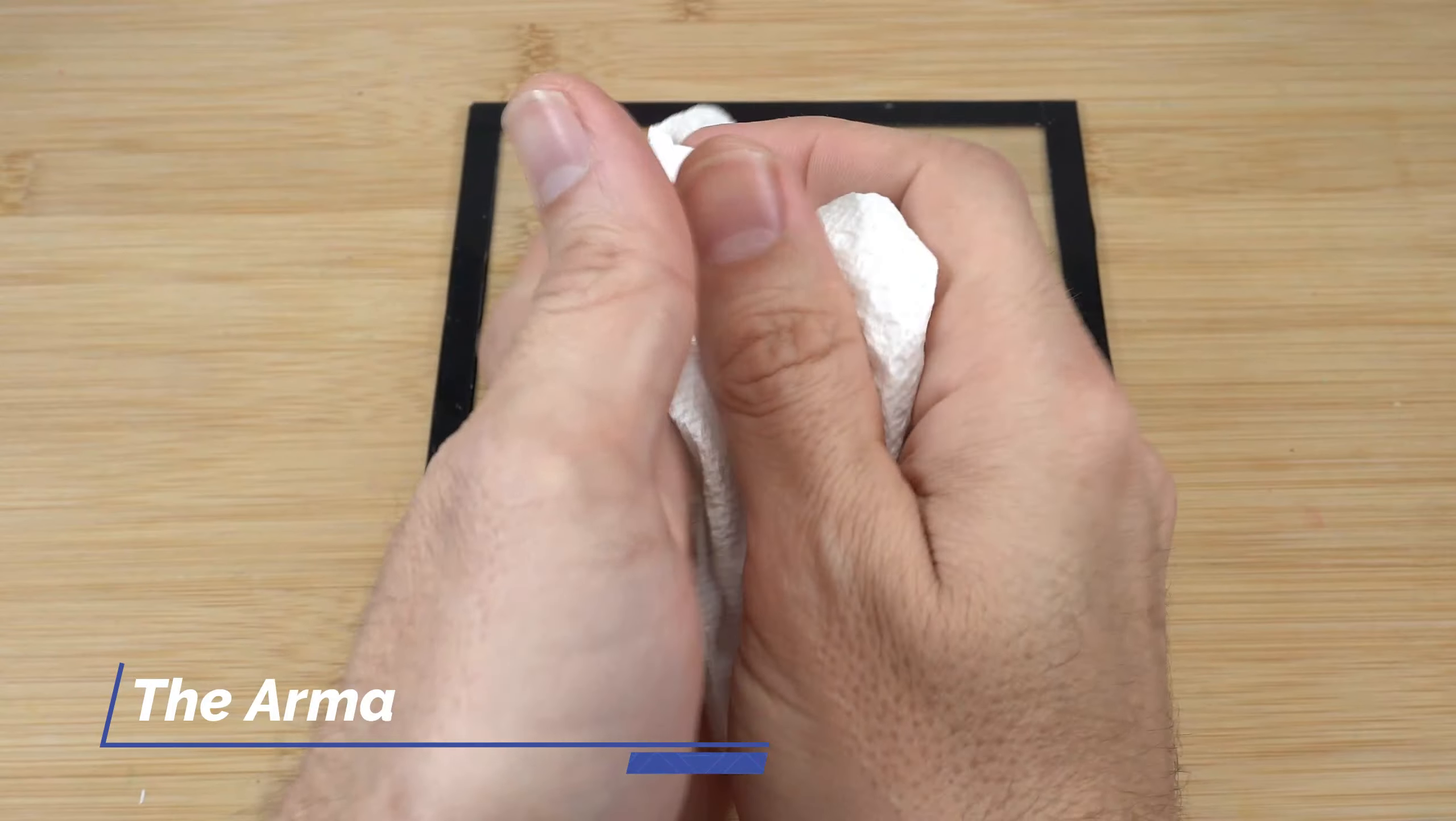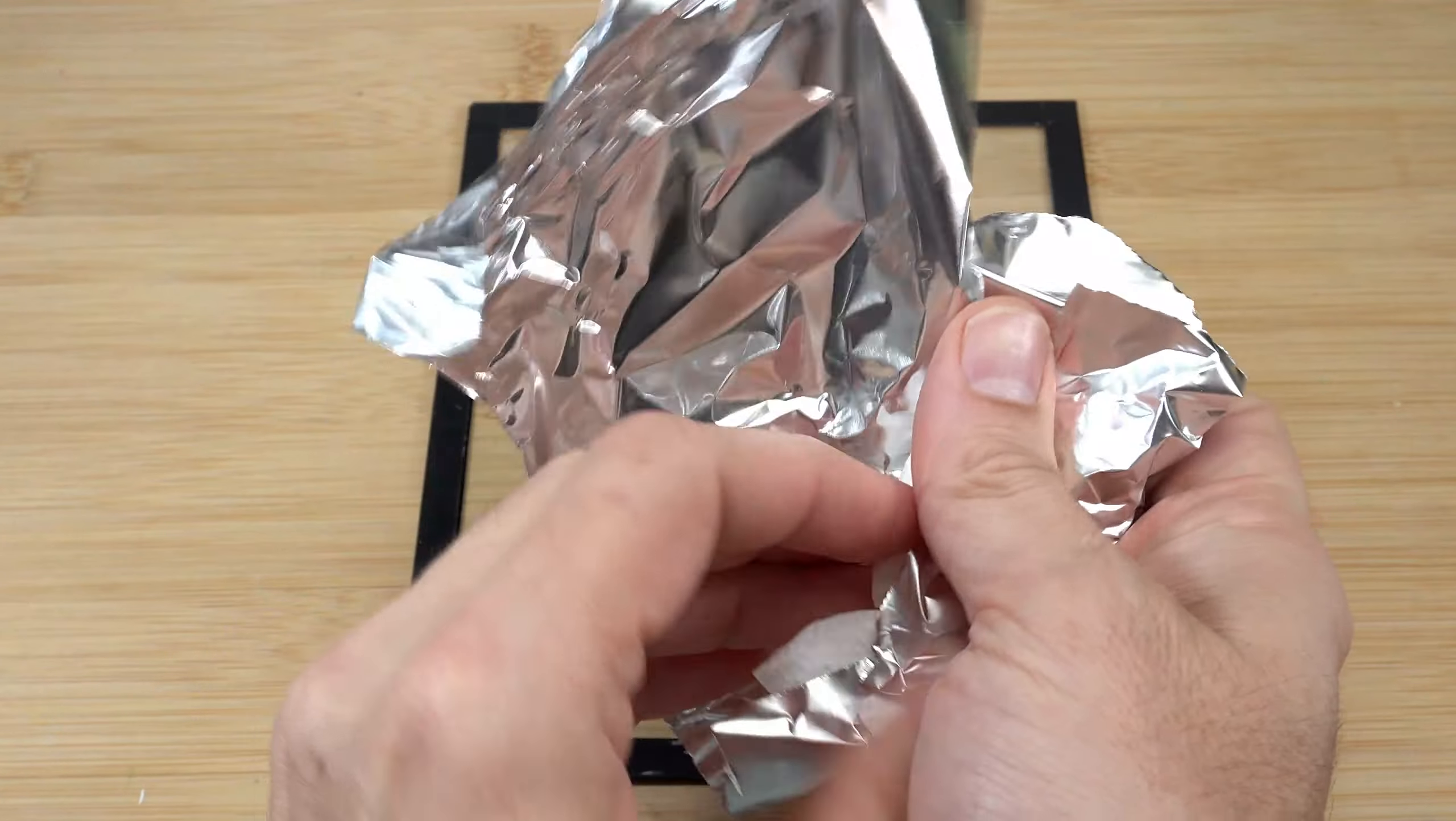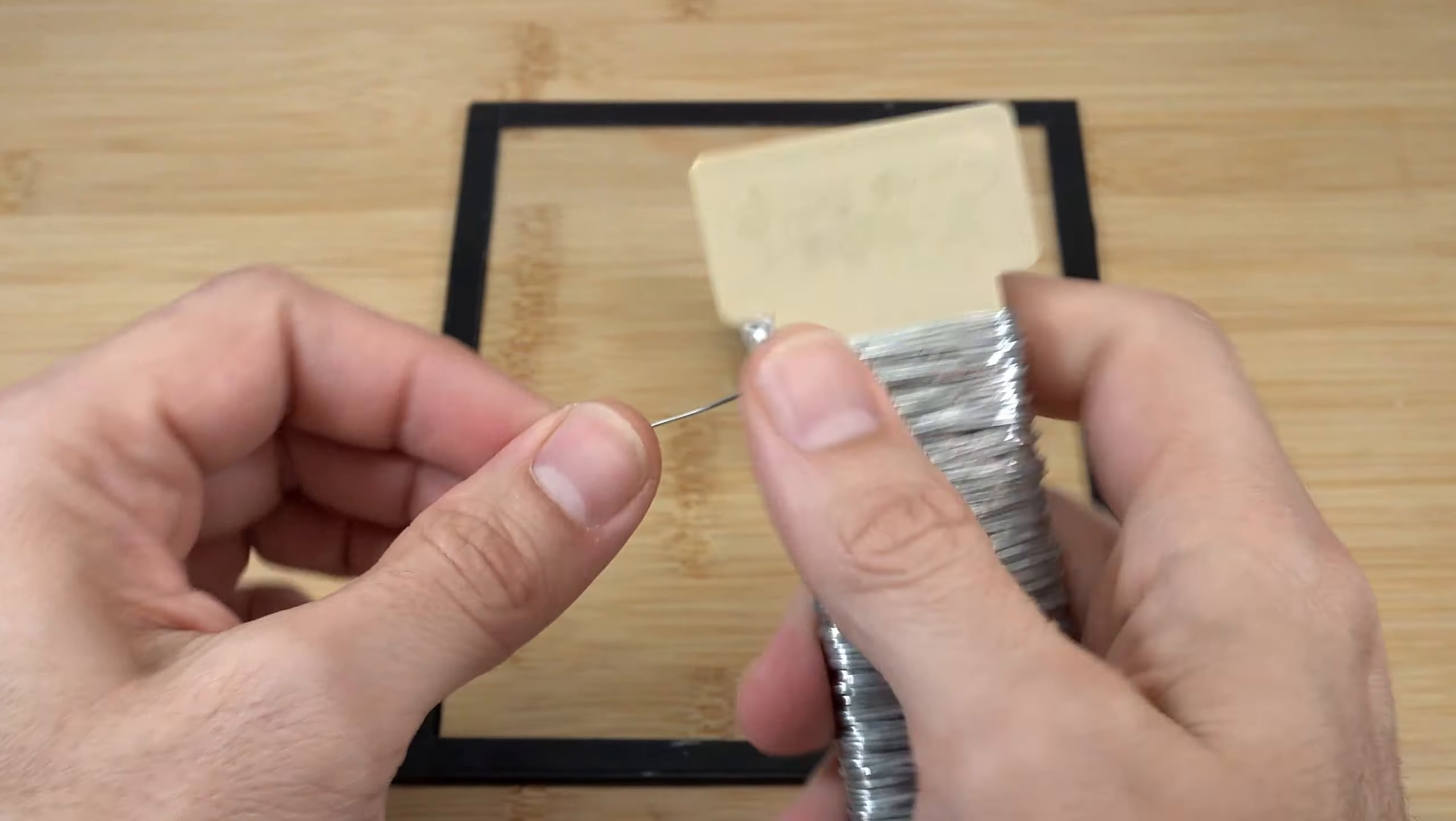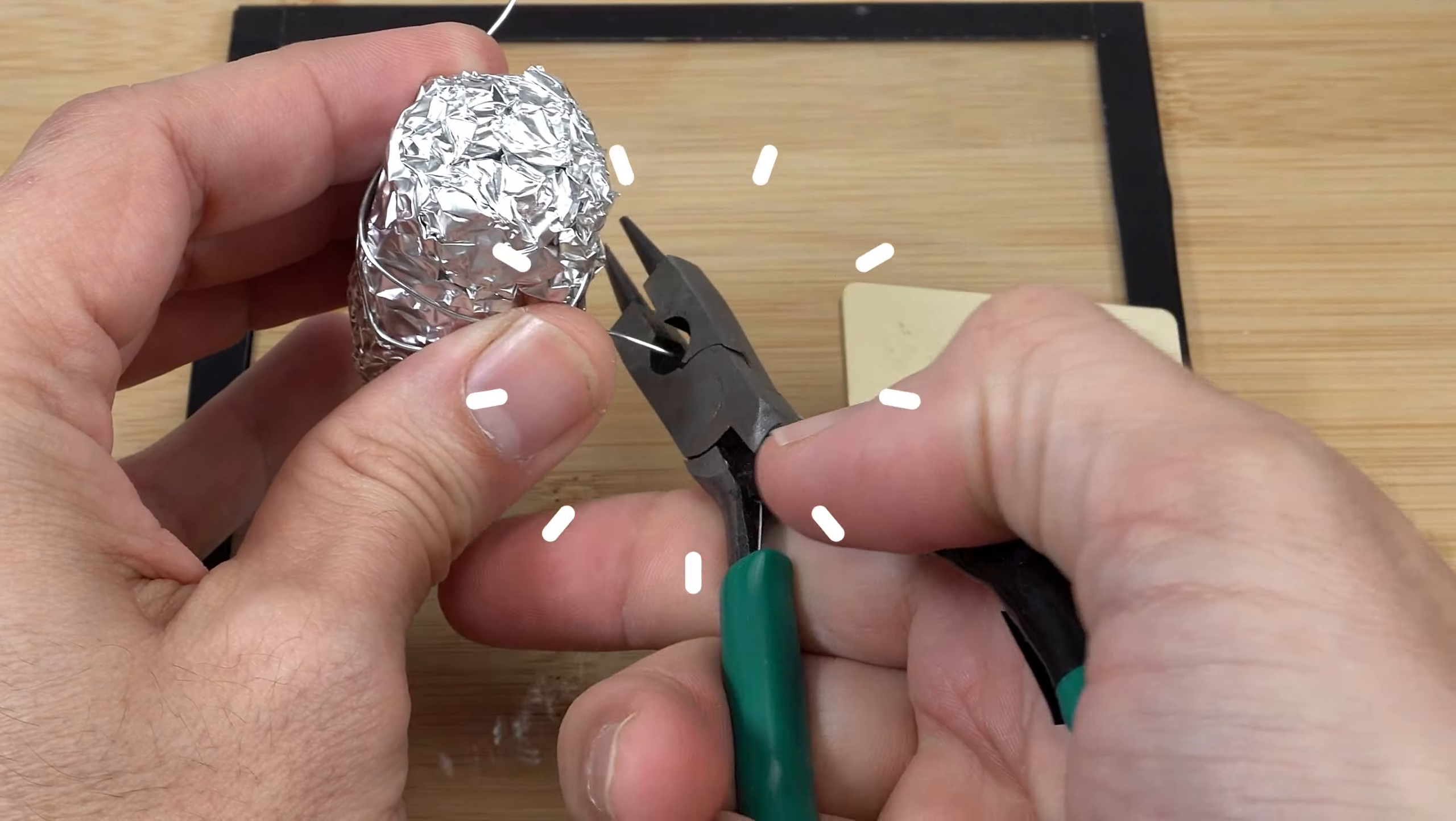The armature. For the armature, I'm creating a big ball for the body using paper towel, aluminum foil and wire. Then I'm covering it up with masking tape.